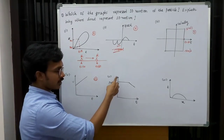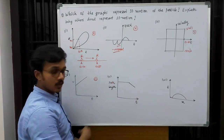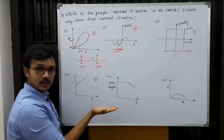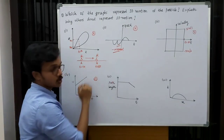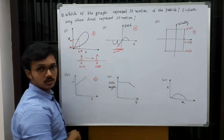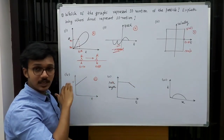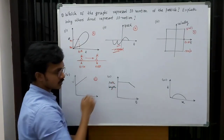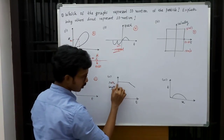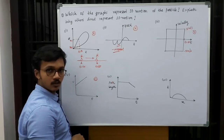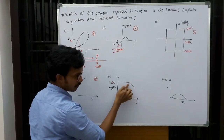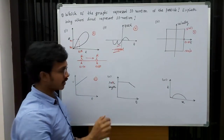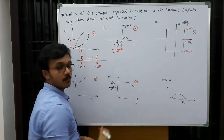Let us see the next graph. Here we are given with path length versus time. To explain this, let me consider the same example. When I am moving from A to B, the path length will increase. If I am remaining at rest at position B, the path length will remain constant. But will it decrease with time? The path length can never decrease with time even if the body is at rest. Here the graph shows the path length decreasing with time, which is not possible. So this graph is also not possible.